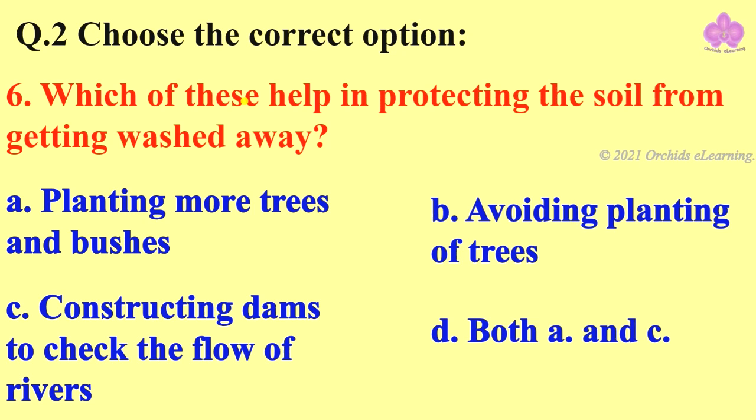And the correct answer is D, both A and C. That is planting more trees and bushes, and constructing dams to check the flow of rivers.